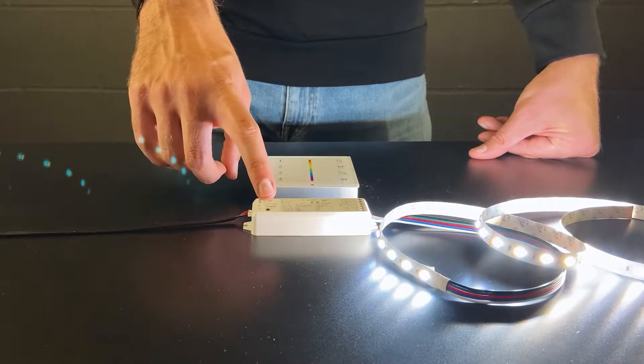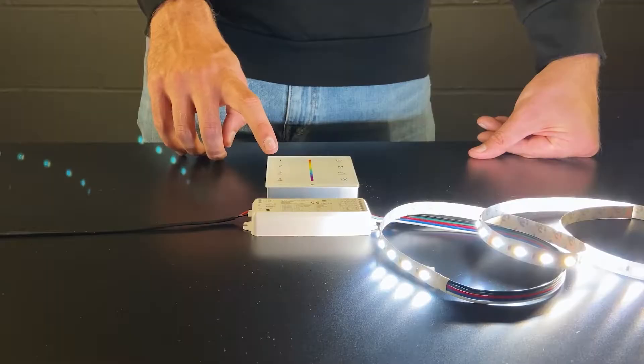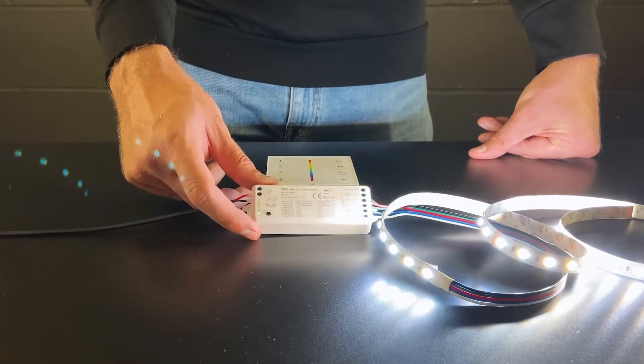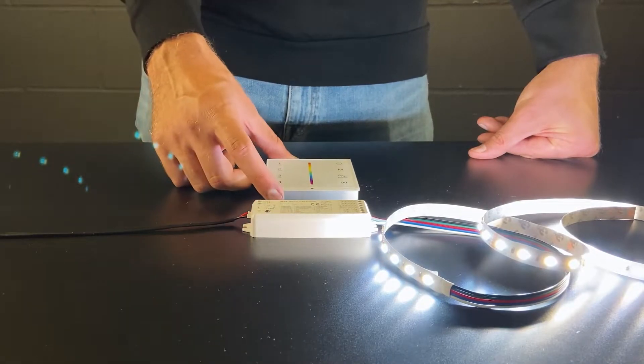To pair the remote, press once on the matching set key and immediately press the zone which you want to sync it to. The light in the WT5 will flash a few times showing that the matching has been successful.